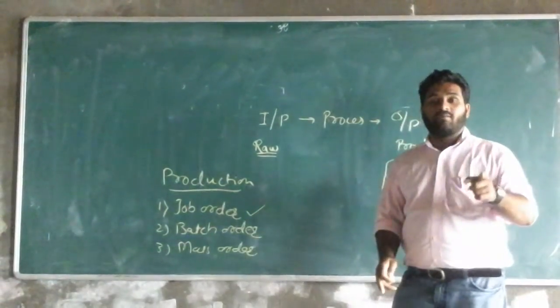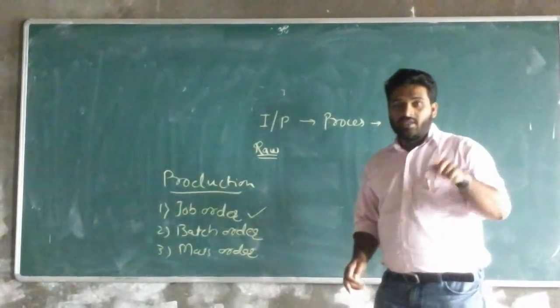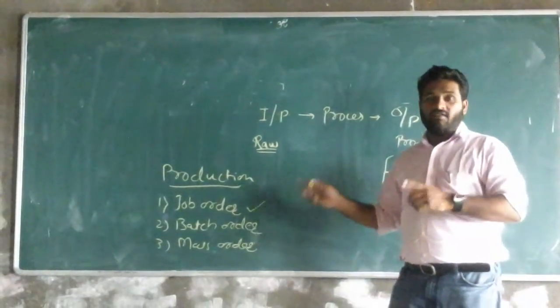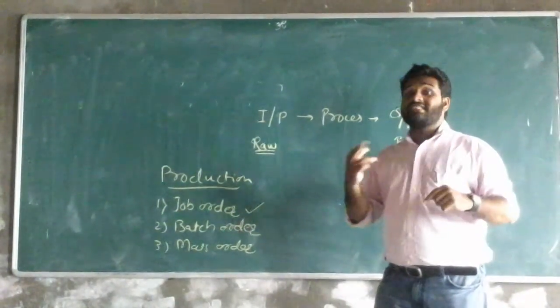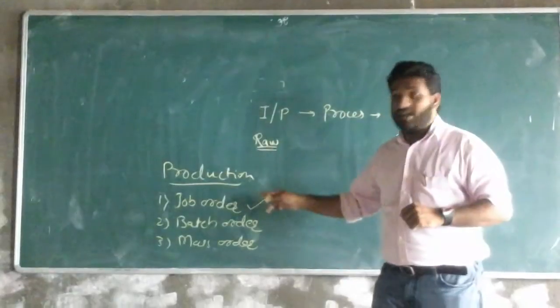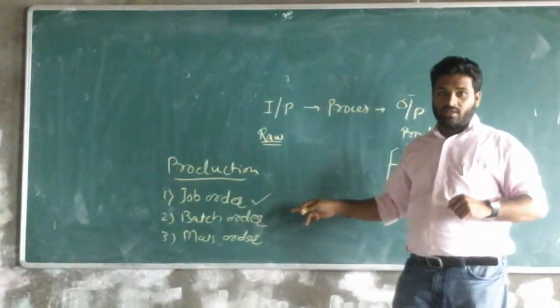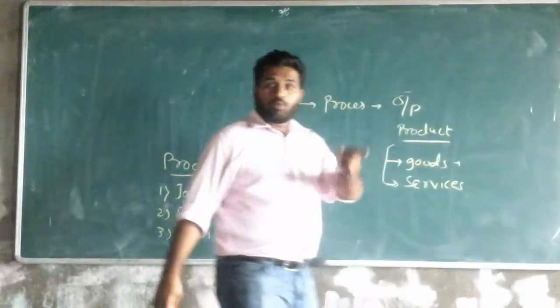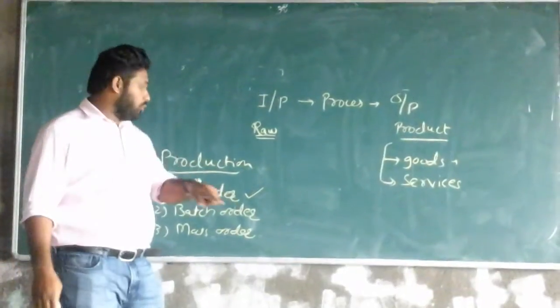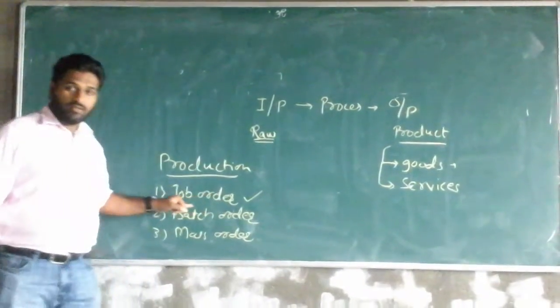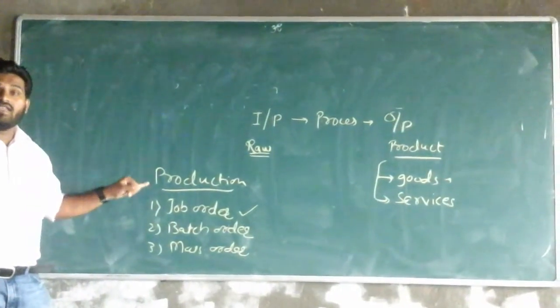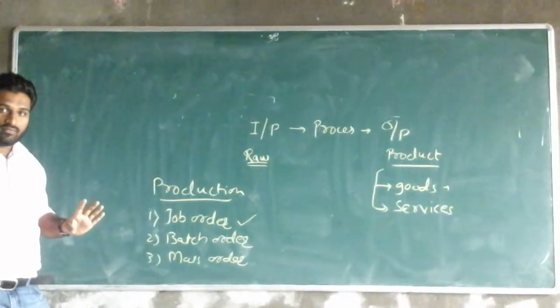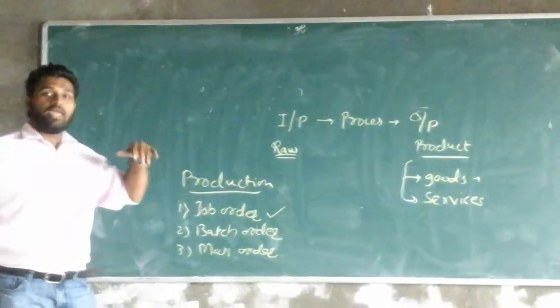Here, material required is very less. Here, the automation required is very less. The highly skilled workers are required in job order production industry. And the job produced, the final product produced will be having high cost. It is made to order production.